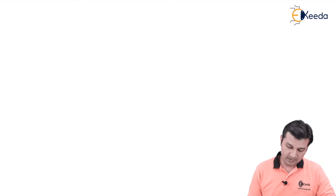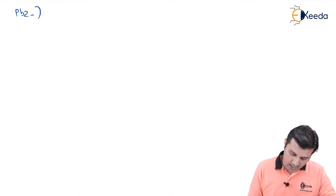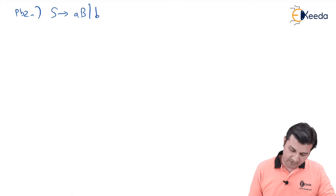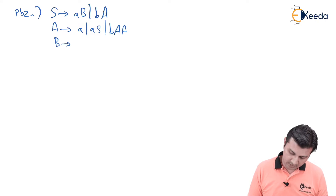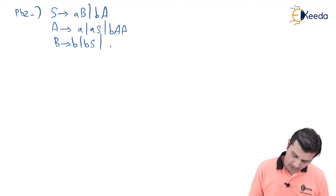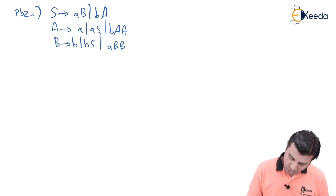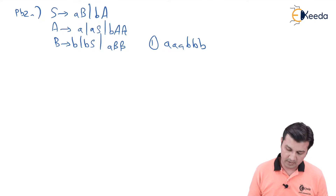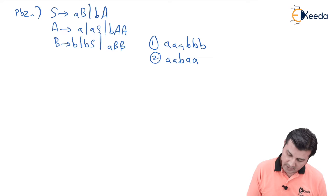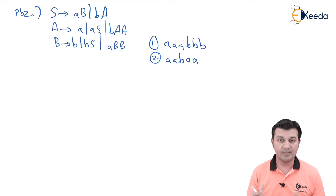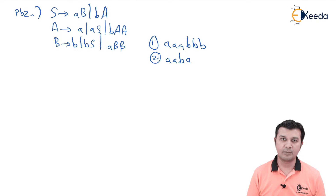The question given here is Problem 2, which says: S gives AB and BA. Then A gives small a, or AS, or BAA. B gives small b, or BS, or ABB. We are asked to derive using LMD and RMD for the string triple-A triple-B as the first string, and the second string we are supposed to derive is aBA.